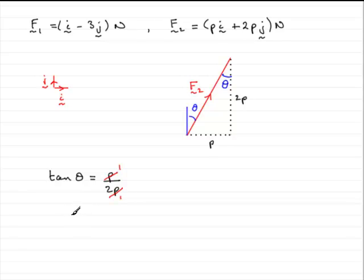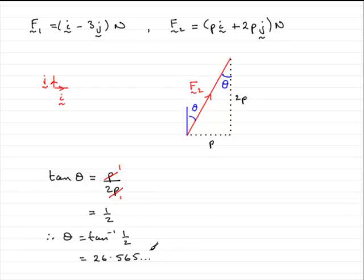So tan theta equals a half. To get theta, we need to take inverse tan of a half. If you do that on your calculator — make sure it's in degrees — you should find that you get 26.565 degrees. Rounding that to one decimal place gives us 26.6 degrees. That brings us to the end of the first part of this question.